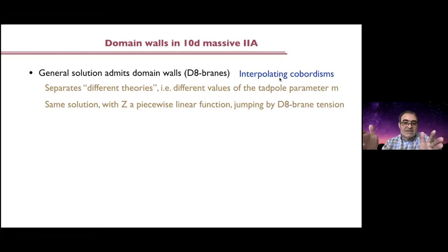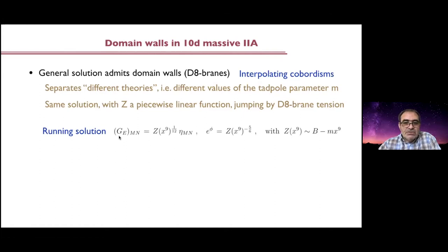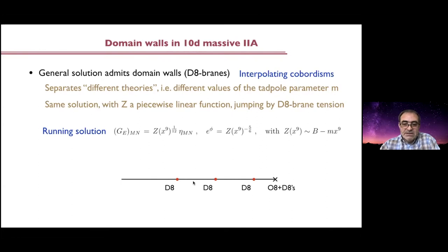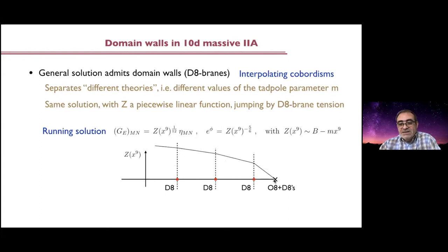You can regard these as interpolating cobordism walls connecting two different theories, or the same theory with different values of the flux or mass parameter. In general the running solution has a similar structure but is now built in a piecewise manner: you can have the end-of-the-world wall on one side, and then several D8-branes at various points. The function is piecewise linear with discontinuities in its first derivative due to the D8-brane tension at the location of the D8-branes — these are the domain walls separating different theories or the same theory with different flux values.